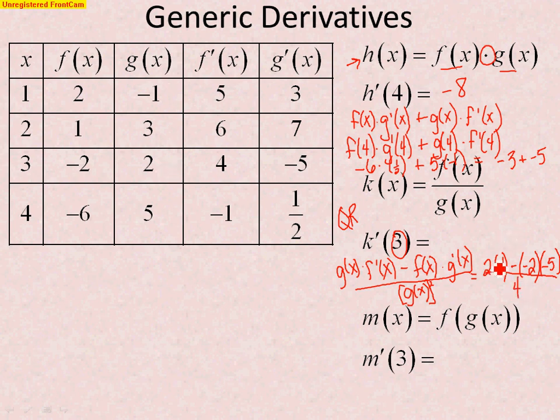So, you end up with 8 minus 10, which is negative 2 over 4, you end up getting a numeric value of negative 1 half, negative 2 over 4, which reduces to negative 1 half.